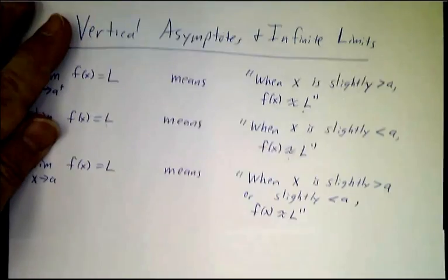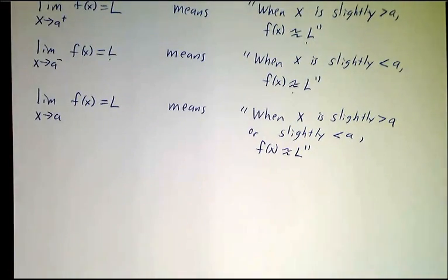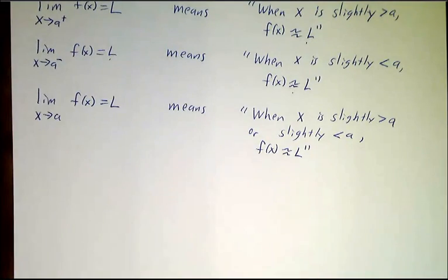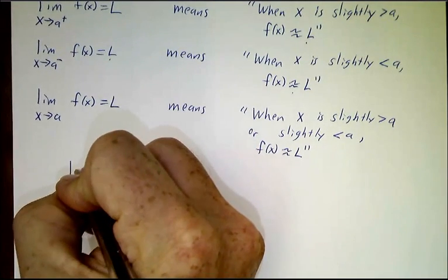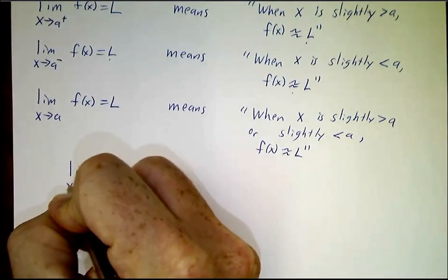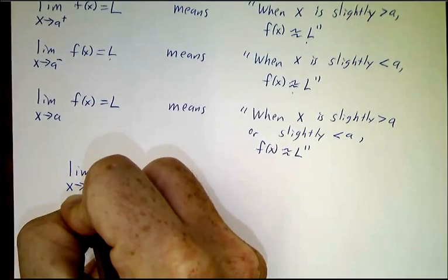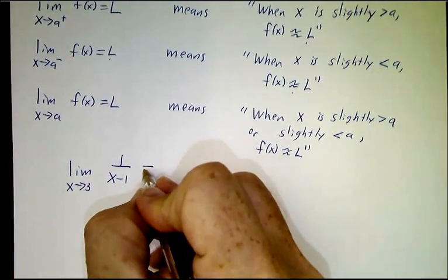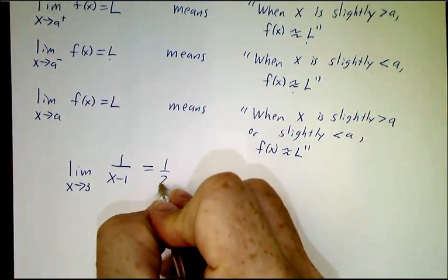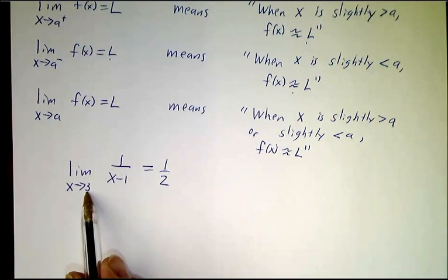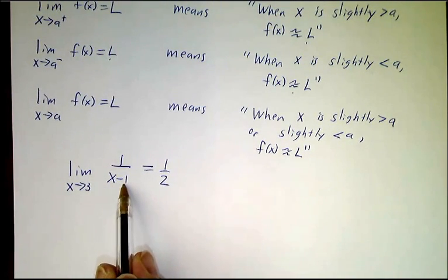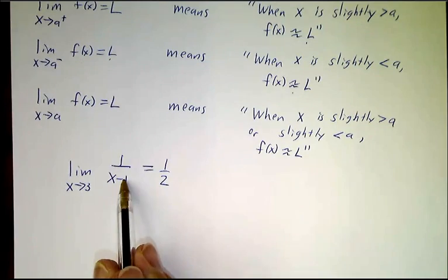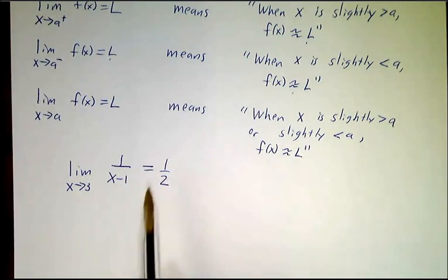What we're going to talk about today is when we have situations where we don't have finite limits, but infinite limits. So for example, if we write the limit as x approaches 3 of 1 over x minus 1, that's a finite limit — that's one half, because whenever you plug in a number very, very close to 3, x minus 1 is very, very close to 2, and 1 over x minus 1 is very, very close to a half.